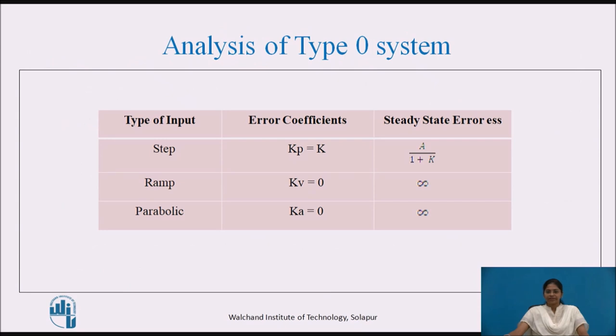This table gives the summary of analysis of Type 0 system for step, ramp, and parabolic input.